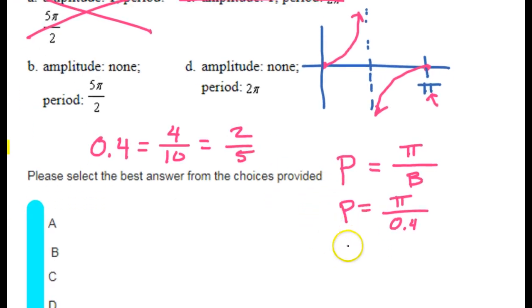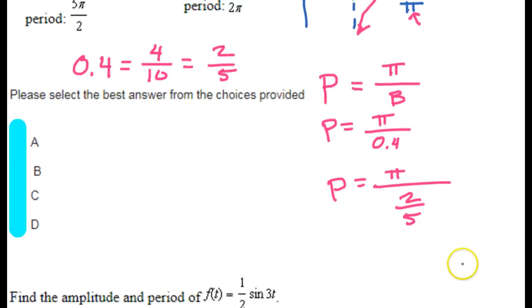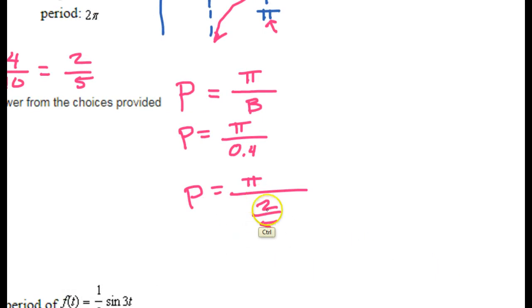So let's think of it that way. Instead of having pi divided by 0.4, the period is pi divided by 2 fifths. Again, in elementary school, they should have taught you how to divide by a fraction. The way you divide by a fraction is you multiply by the reciprocal. So this should be pi times 5 over 2. So that means that the period is 5 pi over 2.